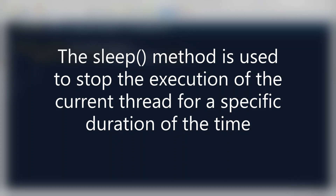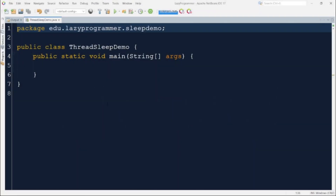Using `Thread.sleep()`, we can specify the number of milliseconds for which we want to pause the currently running thread. Let's take a very simple example where I will make the main thread sleep for 5 seconds and then continue its execution.